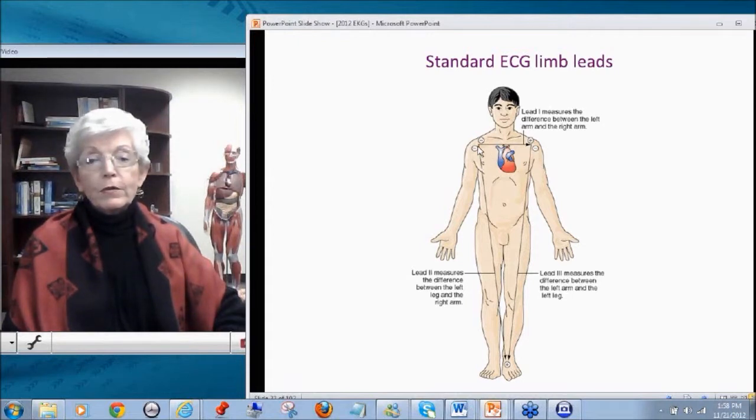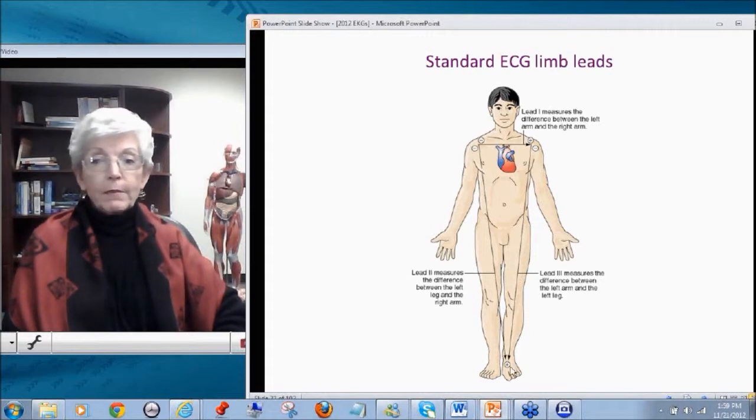Lead 2 is reading from the right arm to left foot or leg being positive. This is very much in the flow, in the direct line, so we get a very positive deflection. Lead 3 is reading from left arm to left leg. Now you'll notice that the polarity now, whereas in lead 1 this was positive, in lead 3 this is negative.